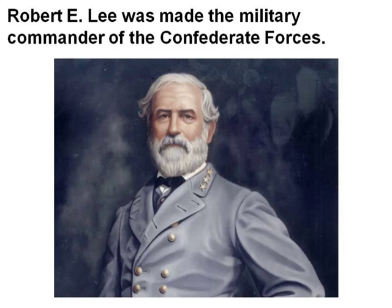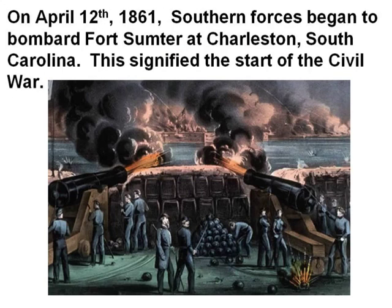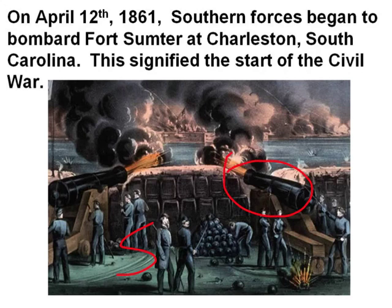Robert E. Lee was made the military commander of the Confederate forces — 'Confederate' is just another word for the South. Here you see a picture of Robert E. Lee. On April 12, 1861, southern forces began to bombard Fort Sumter at Charleston, South Carolina. This signified the start of the Civil War. These are southern forces firing cannons at Fort Sumter, which is in Charleston Harbor.